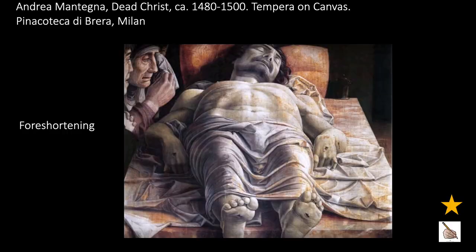Now let's look at Andrea Mantegna's Dead Christ. Foreshortening was used to portray an object or view as closer than it is, or as having less depth or distance, as an effective perspective on the angle of vision. Here in the Lamentation, the chest and legs of Christ are shortened, creating a sense of space and depth.